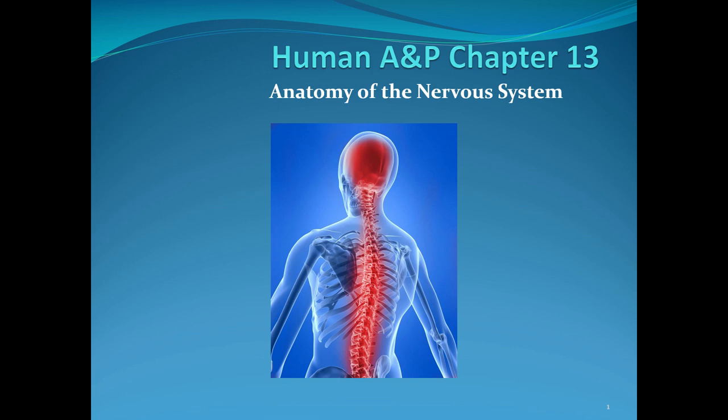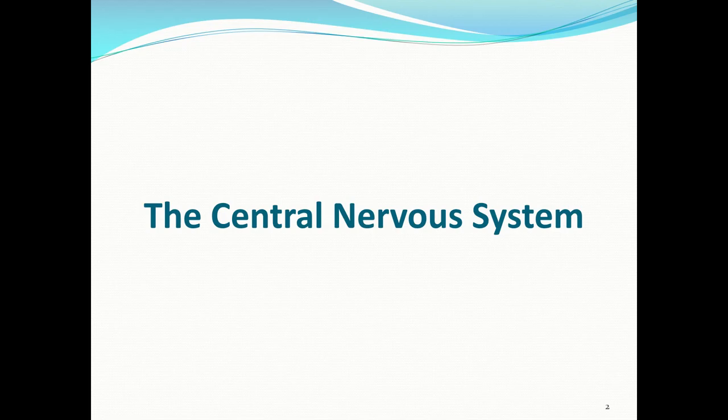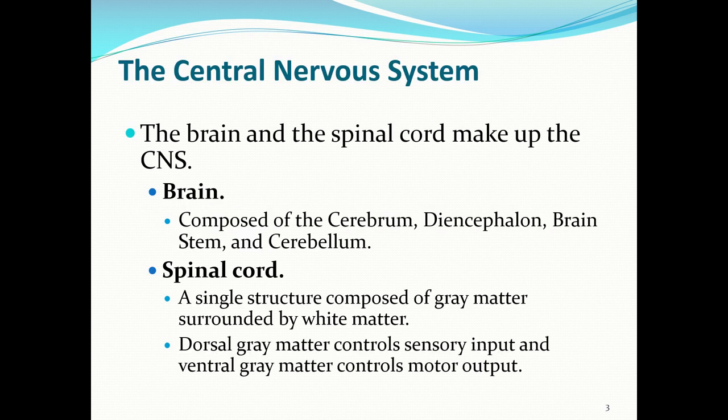This lecture is on Chapter 13, the anatomy of the nervous system. The central nervous system is composed of the brain and the spinal cord. The brain has the cerebrum, diencephalon, brainstem, and cerebellum. The spinal cord is a single structure composed of gray matter surrounded by white matter tracks, with dorsal gray matter that controls sensory input and ventral gray matter that controls motor output.